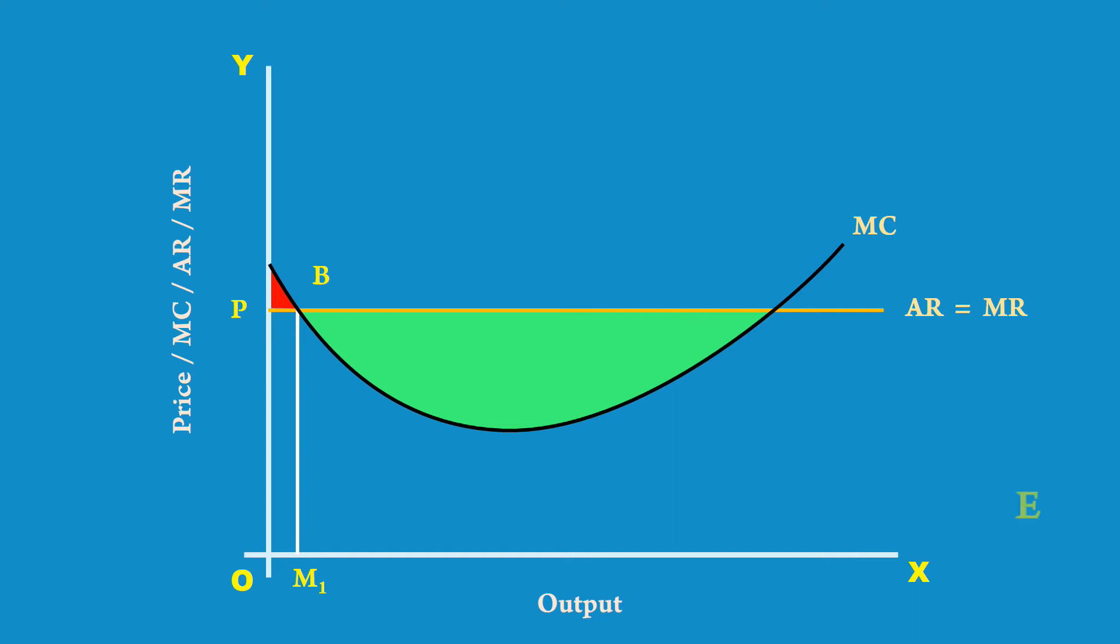At last, at point E, marginal cost becomes equal to marginal revenue. First condition of the producer's equilibrium is satisfied.